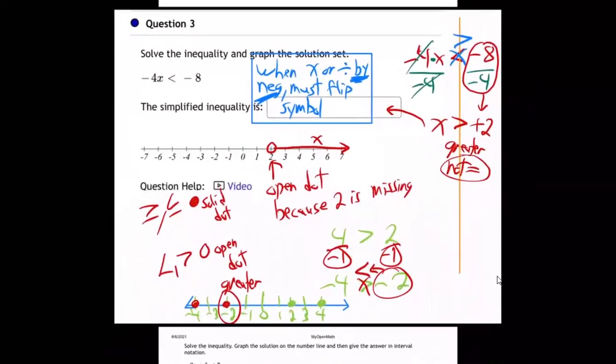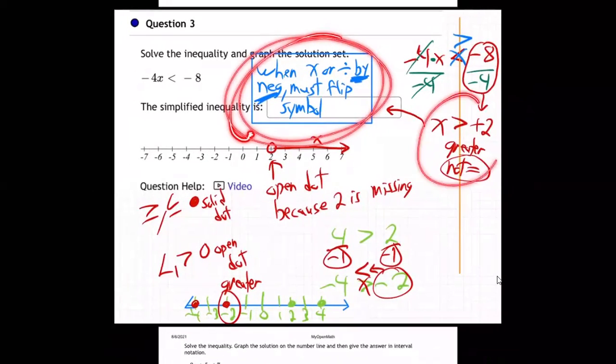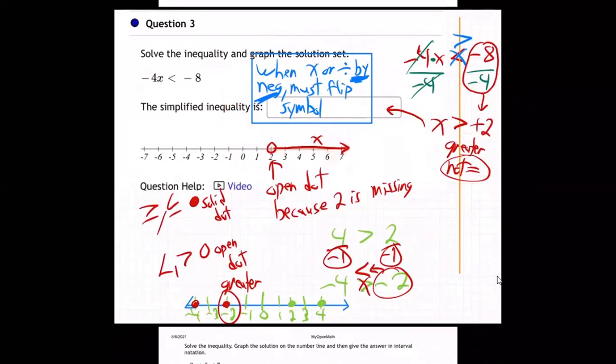There's the answer. So remember, when you divide or multiply by a negative you must flip the symbol. X greater than 2, open dot to the right.